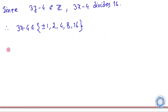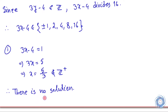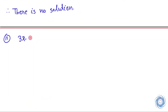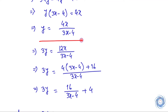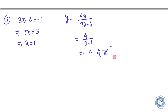Let us take 3x minus 4 equals 1. From here we have x equals 5 over 3, which is not an integer, so there is no solution. Now let us take 3x minus 4 equals minus 1. From here we have x equals 1. We calculate y using y equals 4x over 3x minus 4, but y does not belong to Z+, so there is no solution here.